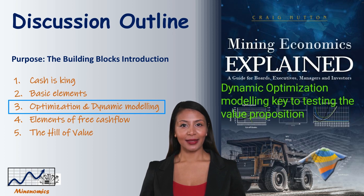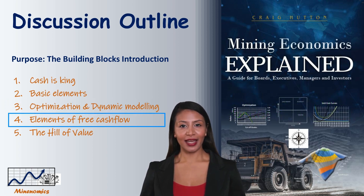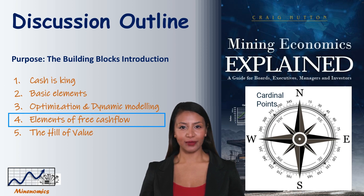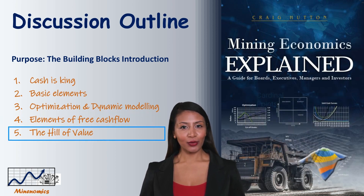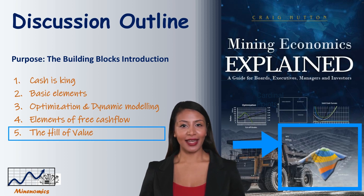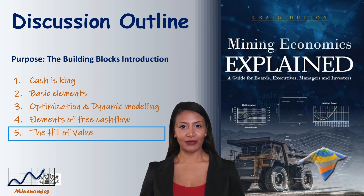The second concept is optimization and dynamic modeling — a comprehension of the basic elements allows us to contextualize the more complex elements of mine optimization. The third is key concepts for dynamic optimization modeling: what has always been missing is a dynamic modeling tool to trade off multiple variables simultaneously and in a comprehensible manner. The fourth is comprehending the cardinal elements of free cash flow, useful when deconstructing a complex multidimensional and dynamic optimization algorithm. The fifth is the hill of value — a great representation of complex calculations that underpin the optimization of a mining proposition, helping understand what drives value and key value maximization elements.